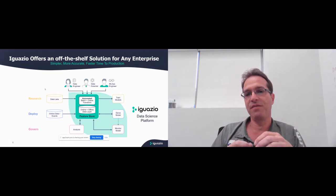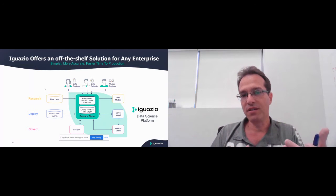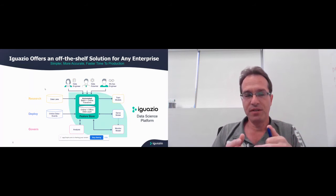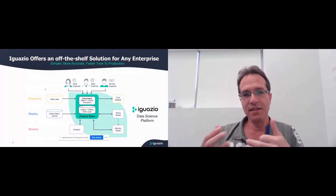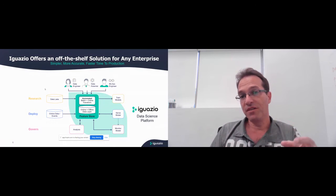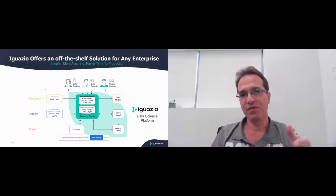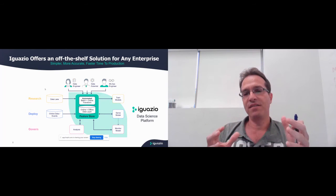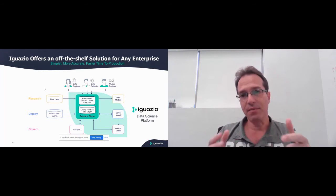Monitoring is another angle: you have the feature vector going to the model, and in the Feature Store you trained the model, so you have full analysis about the features. You can compare the features used in training with those being sent in the production serving layer — if there's a gap, you can identify data drift. This also helps avoid train-serve skew because you're using the same logic for training and serving, without needing to rewrite any code. This minimizes the back and forth between data scientists, data engineers, and MLOps engineers.